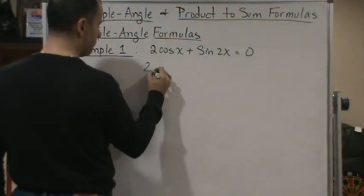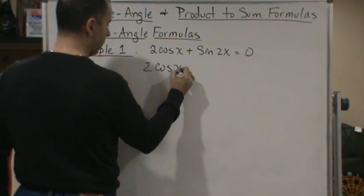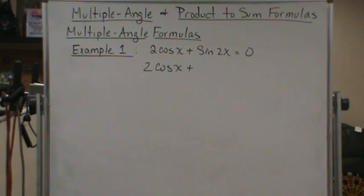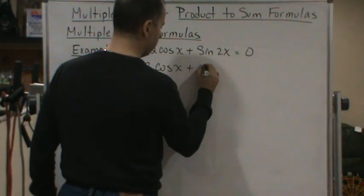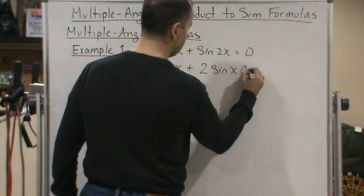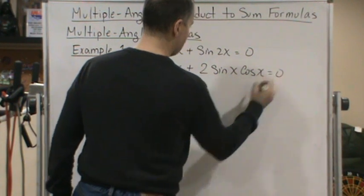So let's first rewrite this as 2 cosine x plus, now in this case here, there's only one way to write this. And again, if you forget, just derive it using the sum angle. So this becomes 2 times 2 times sine x cosine x.